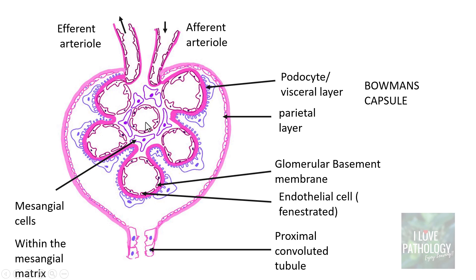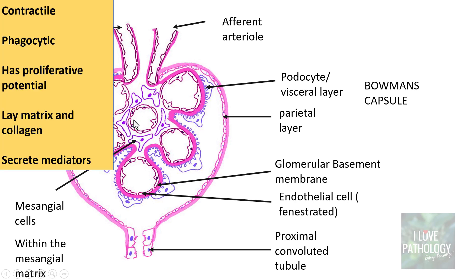The basic functions of mesangial cells are: they are contractile in nature, they are phagocytic in nature, and they do have proliferative potential — whenever the glomeruli is injured, these cells also proliferate. They are the ones which lay the matrix and collagen and they also secrete mediators during inflammation.